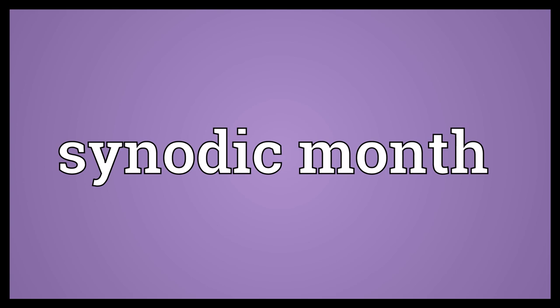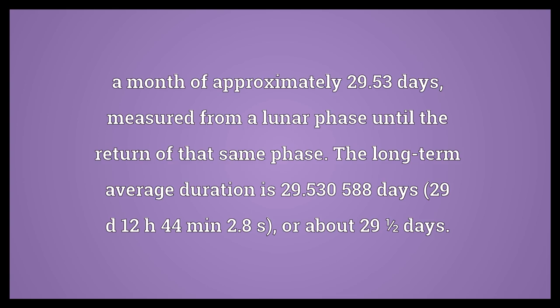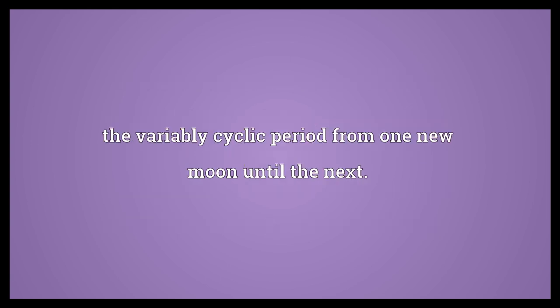Synodic month: a month of approximately 29.53 days, measured from a lunar phase until the return of that same phase. The long-term average duration is 29.530588 days — 29 days, 12 hours, 44 minutes, 2.8 seconds. The variably cyclic period from one new moon until the next.